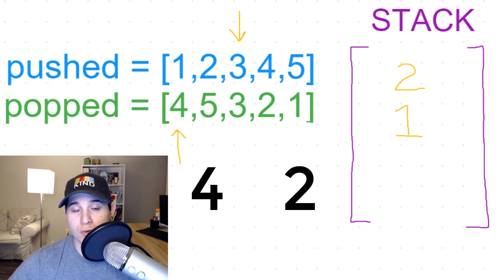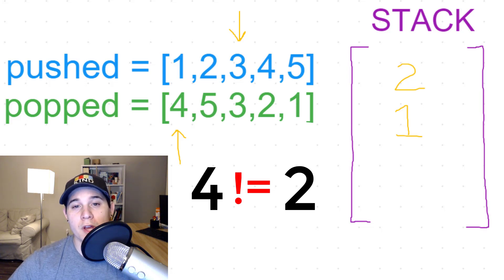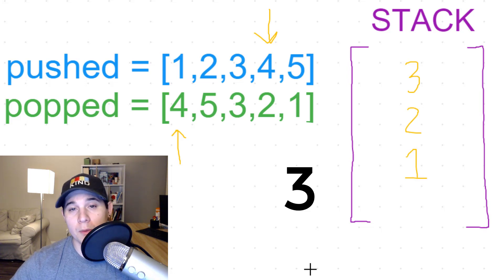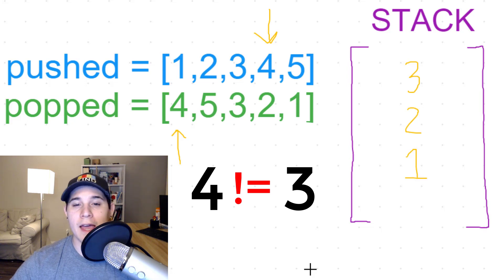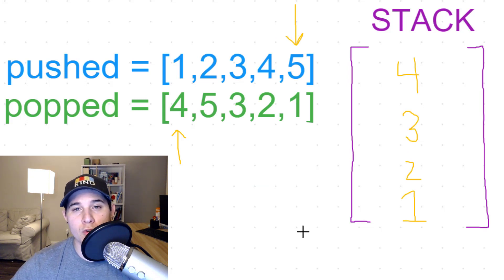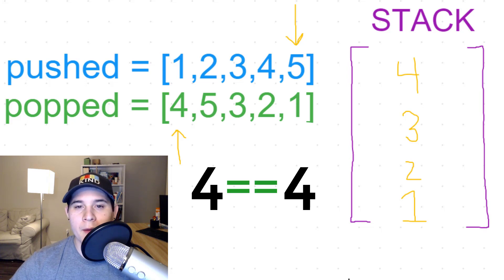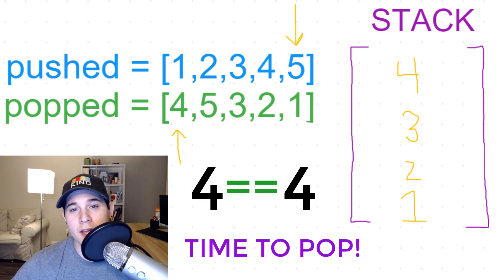2 is not equal to 4 either, so we push 3 and move the pointer forward. 4 is not equal to 3, so we push 4 from the pushed array. Now if we look at the top of our stack and the current popped number, they are both 4 — they're equal. So we pop from our stack and move our popped pointer forward.